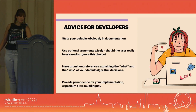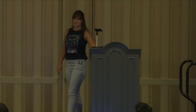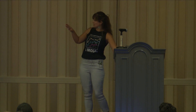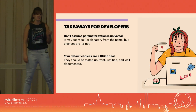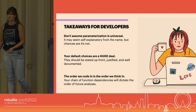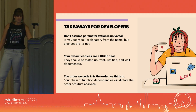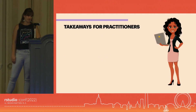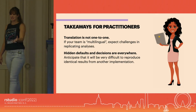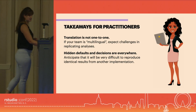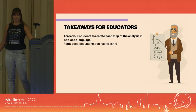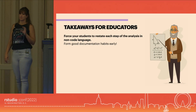Recap: the challenges you see in language learning also appear in coding. For developers: don't assume the parameter name tells people what it does; don't assume default choices are the obvious choices — they're not universal, you have to document them; and the order that we code is the order that we think. For practitioners: translation is not going to be word for word, so please discuss what you're deciding, document, and use text. For educators: really force your students to be explicit about every decision.